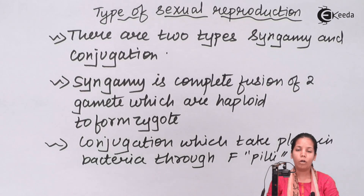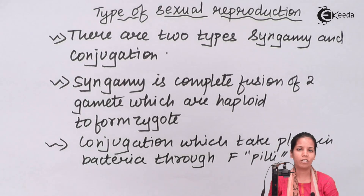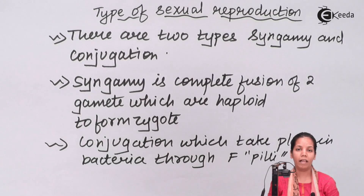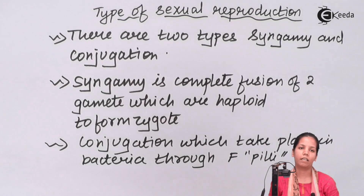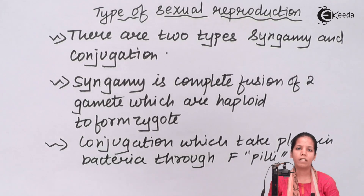Sexual reproduction includes two parents — a male and a female parent. There are two types of sexual reproduction observed. One is conjugation, observed precisely in bacterial cells, where they develop F-pili, or F-duction is observed, just to pass genetic material during genetic experiments or experiments involving genetic transfer. Conjugation is never observed in human beings.